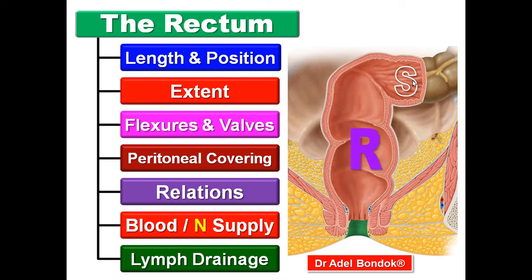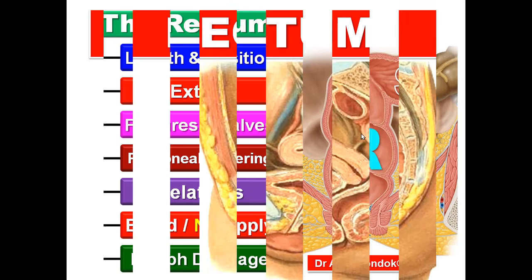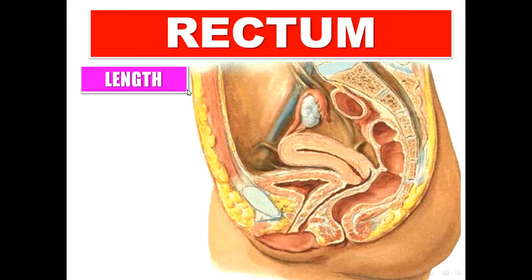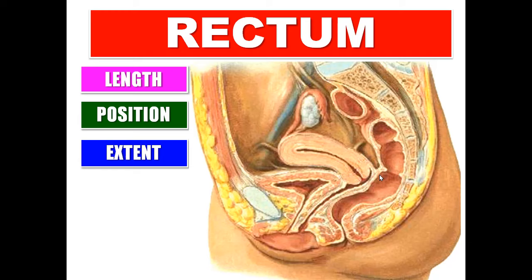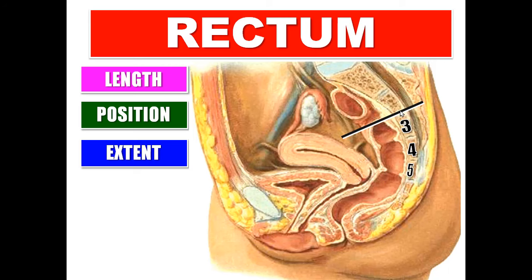This is the sigmoid colon and this is the rectum. The length of the rectum is five inches. The position: it is located in the lower and posterior part of the pelvic cavity. The extent: it begins opposite the third piece of the sacrum as the continuation of the sigmoid colon, and it ends at the recto-anal angle, which is about one inch below and in front of the tip of the coccyx.